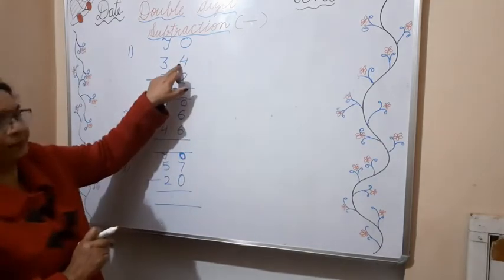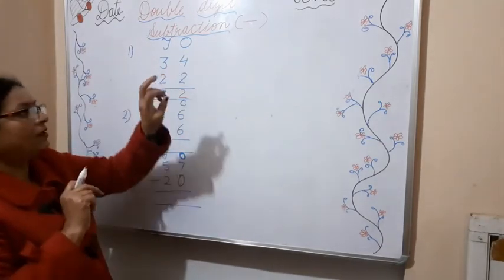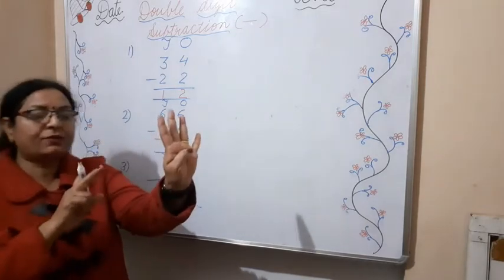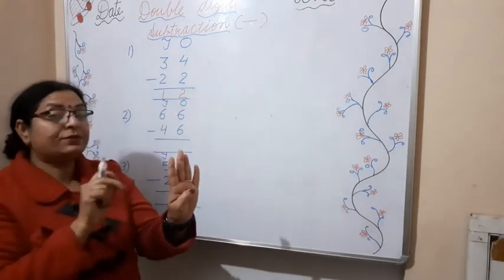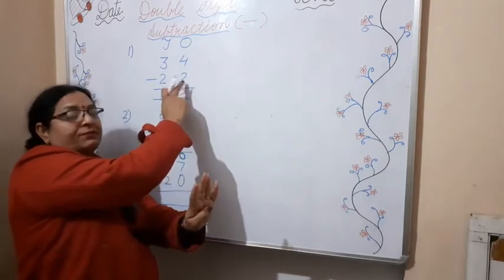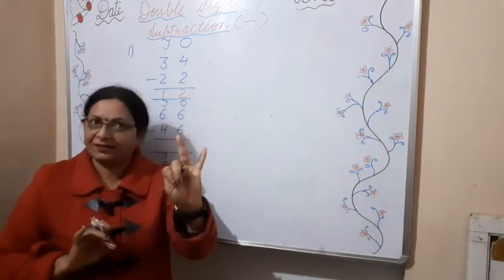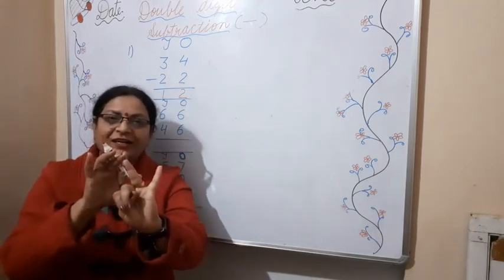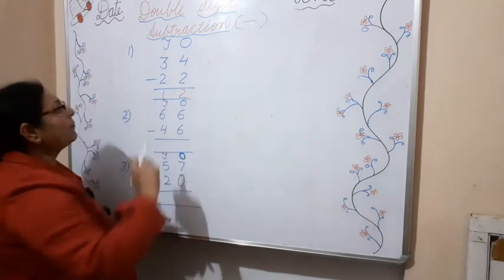Here the number is 4, so we have to subtract the number 2. You take out your 4 fingers: 1, 2, 3, 4. And we have to subtract 2. This is the 2 we have to cut: 1 and 2. So how many fingers do we have left? 1 and 2. Your answer is 2.